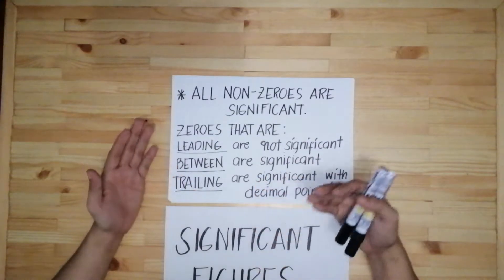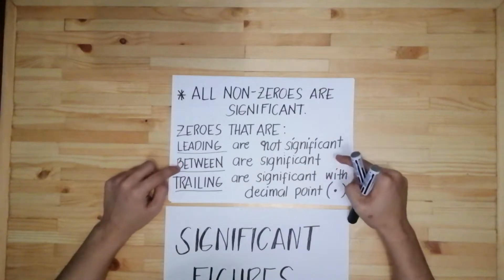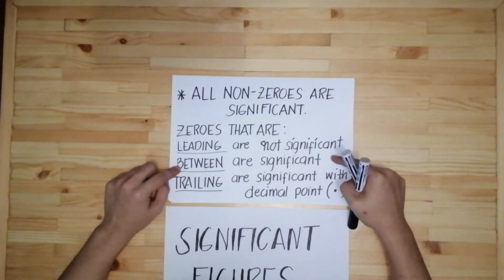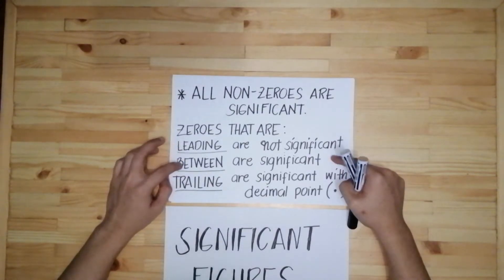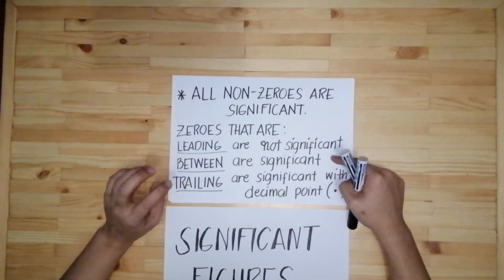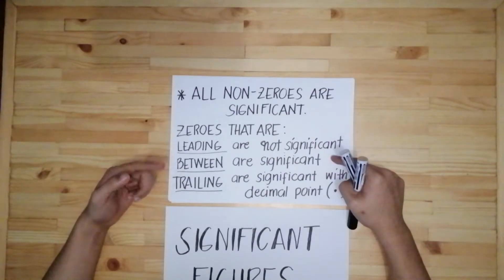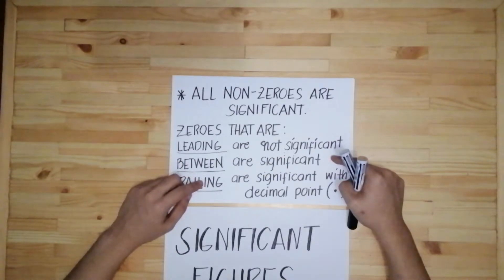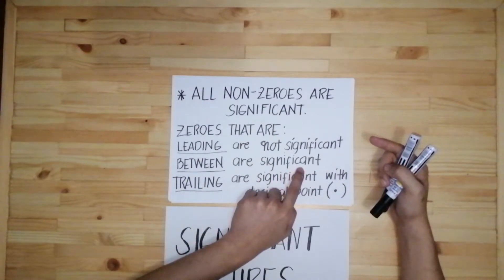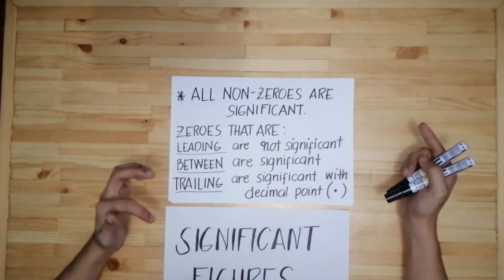If you find zeros in front of the numbers, you will not count them as significant figures. Then we also have 'between' — zeros that are between two significant digits or two non-zero numbers. So when you find zeros that are between non-zero numbers, they will be counted as significant figures.